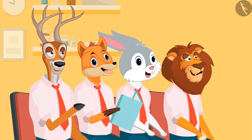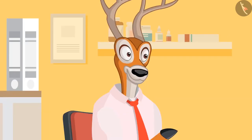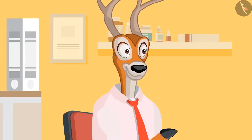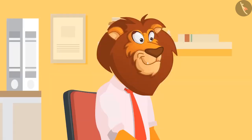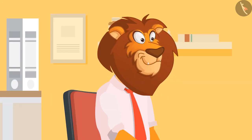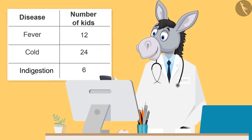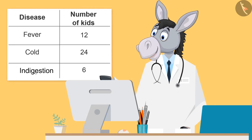We are good. Dr. Uncle, what is this on the walls of your room? Through these charts we get an idea of which disease has caused trouble to most kids of our school this month. This month, fever, cold, and indigestion have caused a lot of trouble to you children. I have represented the data in this form.